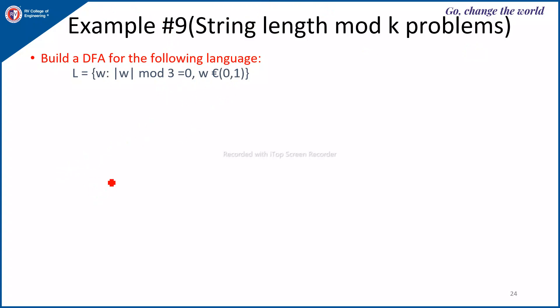Again, we are mod 3, so therefore the set of states will be Q0, Q1, Q2 as in the previous exercises.